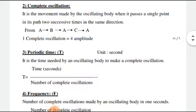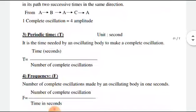Periodic time and its measuring unit is second. It is time needed to complete one oscillation. That means it is time in seconds over number of complete oscillations.